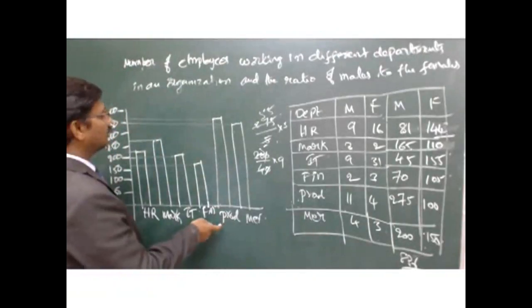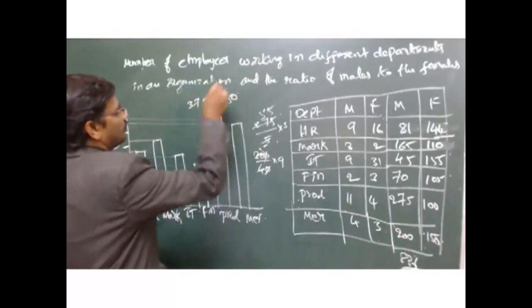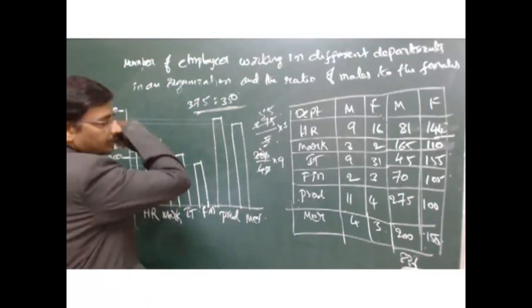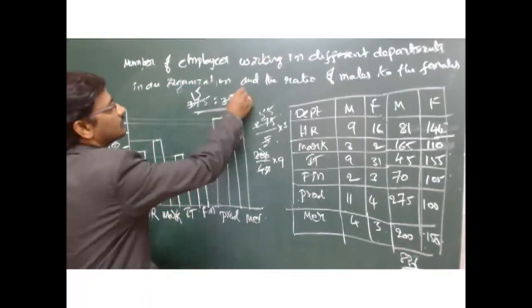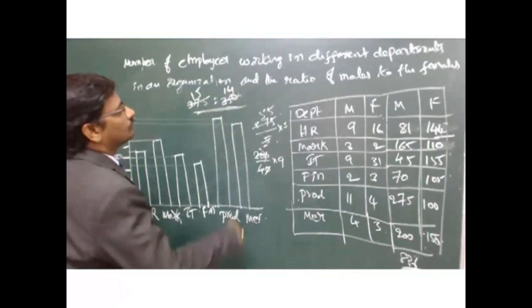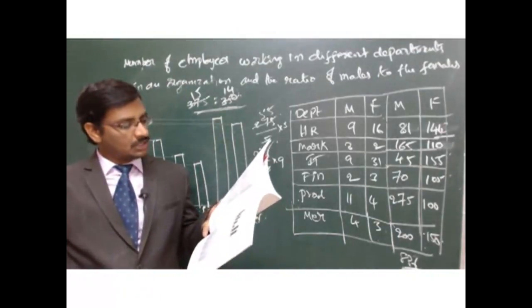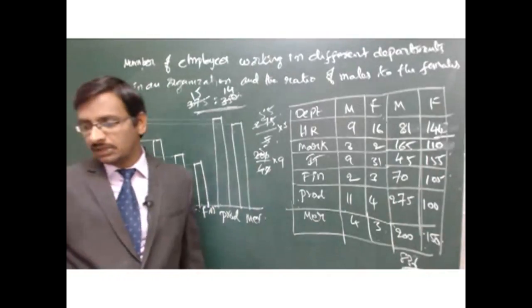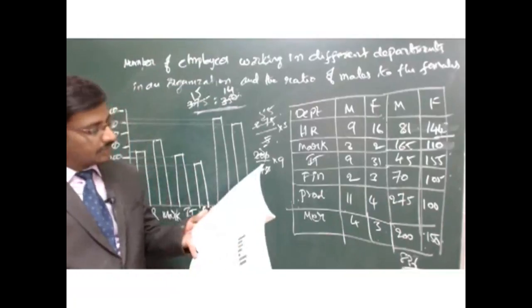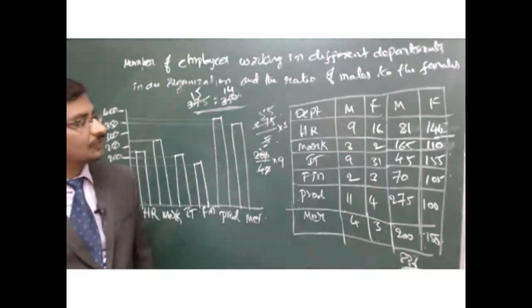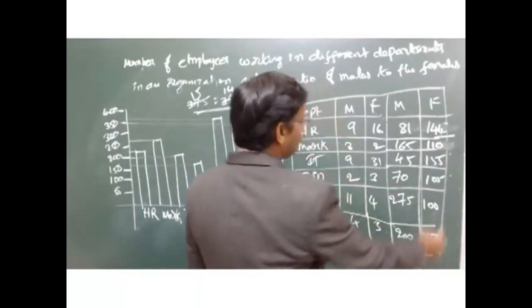Production department has 375 members. So the ratio of production department to merchandise department. In which department are the lowest number of females working? The lowest number of females is 45 members - that is the IT department.